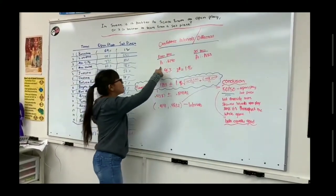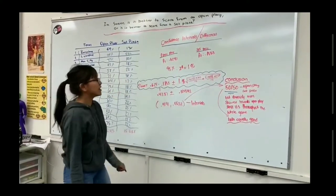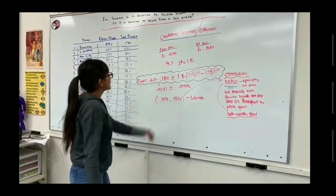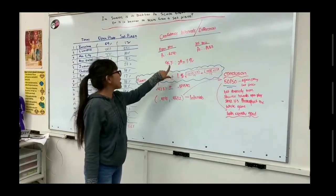For the open play, the p-hat was 0.6240, as I said before, and for the set piece, it's 0.1853. We're going to be doing a 95% confidence interval, and for that, the z-score is 1.96.